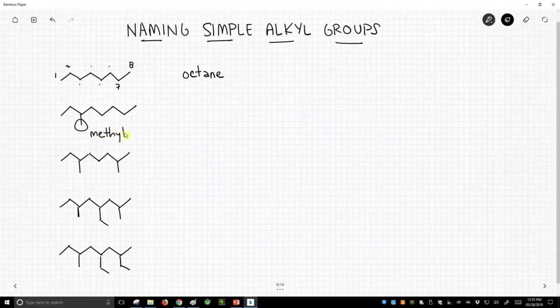This is a methyl group. Now we need to number our chain so that our key functional group gets the lowest number possible. Well we can number from this end and it would be one, two, three, four, five, six, seven, eight.